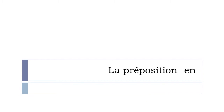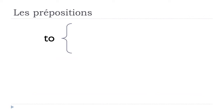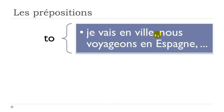La préposition EN can be used to express the TO concept in English. For instance, 'je vais en ville' — 'aller' is to go, and 'ville' is town. Or 'nous voyageons en Espagne' — 'voyager' is to travel, en Espagne means Spain. So in many cases when you want to express this TO concept in English, we'll use this EN preposition.